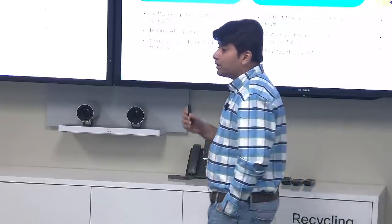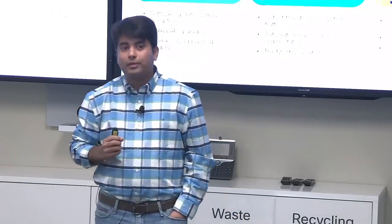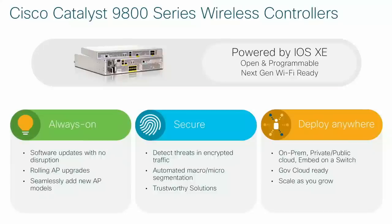Now for security — with more and more traffic getting encrypted, it is very important to detect malware in encrypted traffic before it can bring down the network. We are introducing Encrypted Traffic Analytics on our 9800 controller. Any traffic that goes to the wireless LAN controller in a centralized wireless deployment can have ETA applied to it.